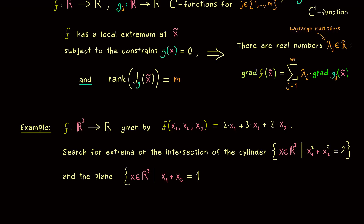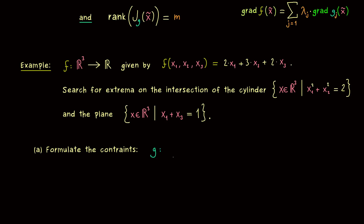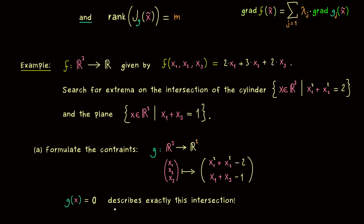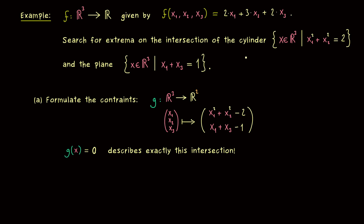Let's start solving the problem by putting this intersection into a constraint function g. Here g maps R3 into R2, since we have exactly two constraint functions. We reformulate the sets so that g equal to 0 formulates the constraint. For the cylinder, the first component is x1 squared plus x2 squared minus 2. For the plane, the second component is x1 plus x3 minus 1. So g equal to 0 describes exactly the intersection of the cylinder with the plane.